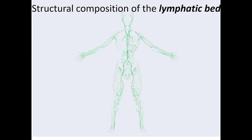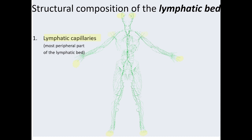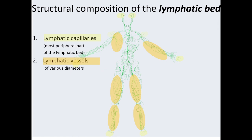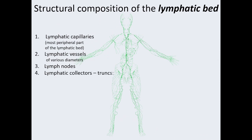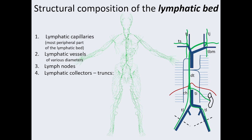Structural composition of the lymphatic bed. The lymphatic bed consists of several components. First, lymphatic capillaries, depicted as yellow spots in the most peripheral parts of the body. Second, lymphatic vessels of various diameters. Third, lymph nodes. Fourth, lymphatic collectors or trunks.